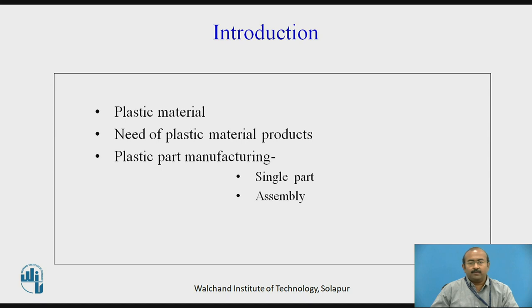Because of these advantages, plastic material is favorably used for part manufacturing. When thinking about plastic part manufacturing, there are different categories: the product can be used as a single part — that means a single part is self-sufficient for the requirement — but many times that is not the case and we need to go with assembly, where many separate plastic parts are required to be assembled together.